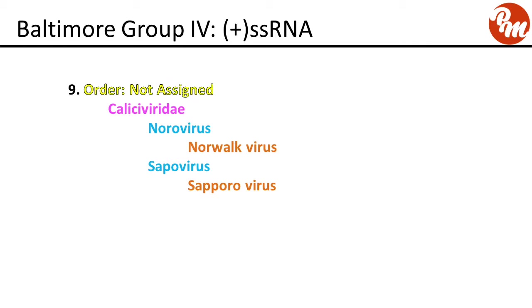Next group, order not assigned, family Caliciviridae. Genus norovirus includes Norwalk virus. The other genus is sapovirus, including saporovirus.